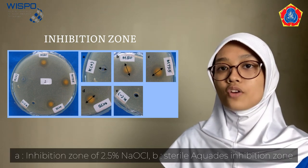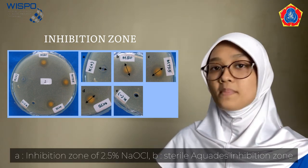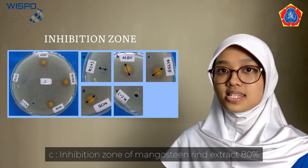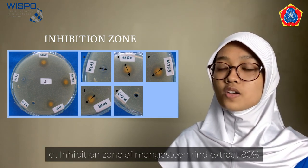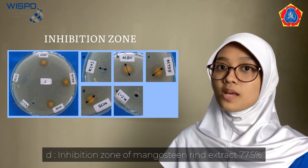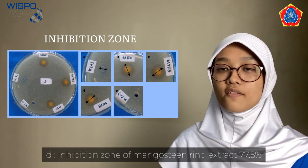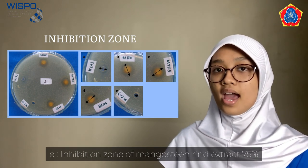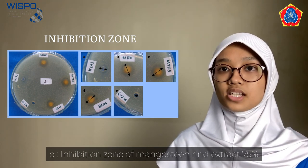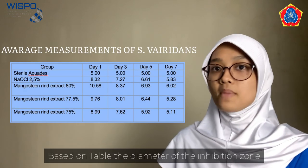A: Inhibition zone of 2.5% NaOCl. B: Sterile aquades inhibition zone. C: Inhibition zone of Mamusin Rai extract 80%. D: Inhibition zone of Mamusin Rai extract 77.5%. E: Inhibition zone of Mamusin Rai extract 75%.